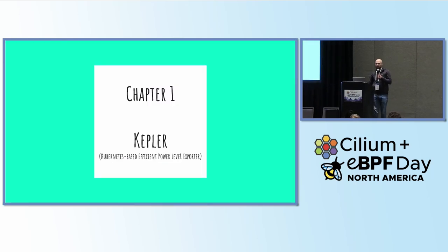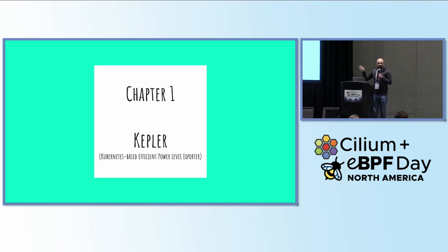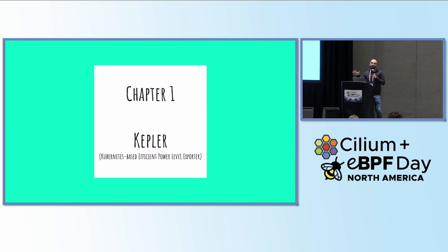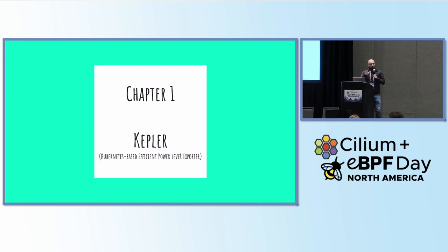Who has heard of Kepler? That's about three people in the room, so this is good — it's lucky I've got something here to explain it. Kepler is an acronym — a horrible acronym for Kubernetes-based Efficient Power Level Exporter. What Kepler is doing is getting information about how much power is used by every process on a node, which is useful if you want to know which applications in your Kubernetes cluster are using the most power.